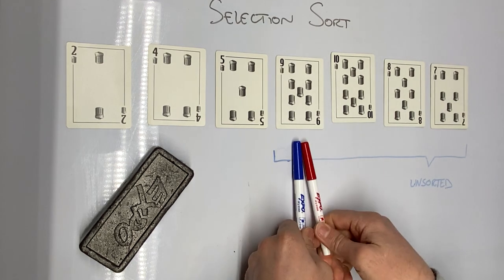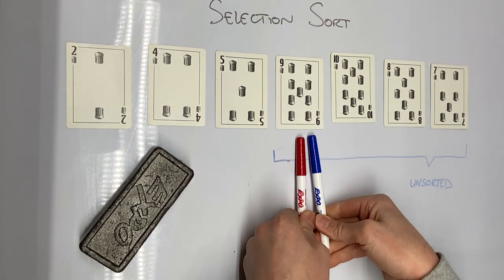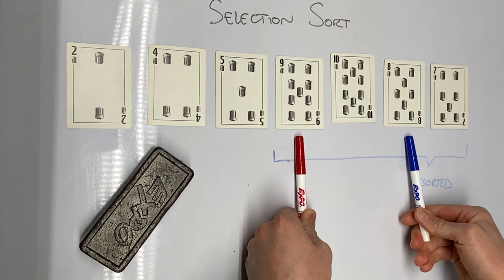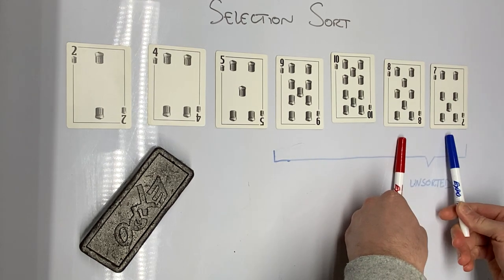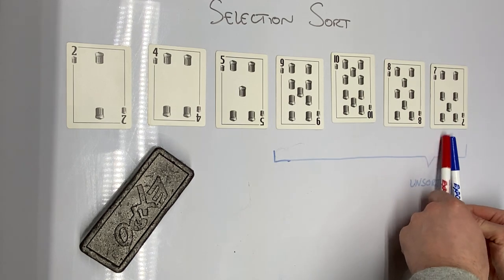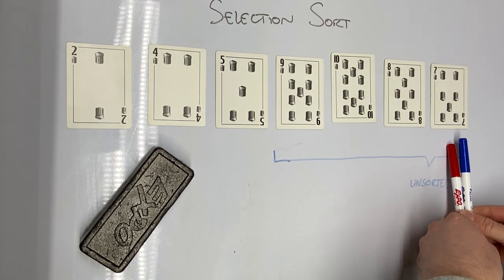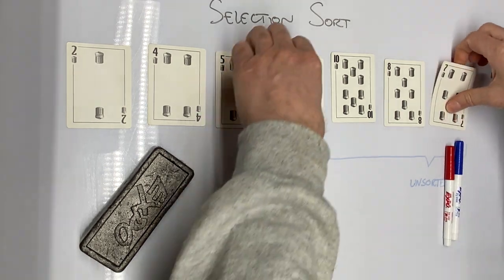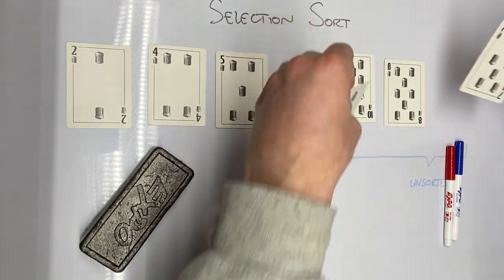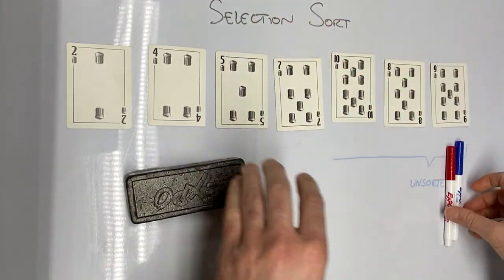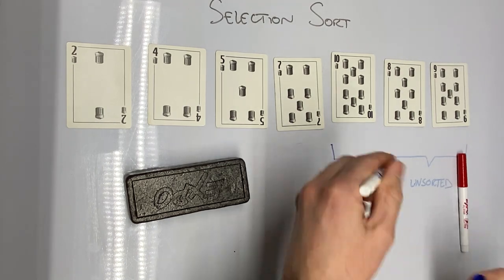Scanning again. Nine is the smallest card — not the ten. Eight is smaller than nine. Seven is smaller than eight. So seven is the smallest card in the unsorted region. We swap the seven with the card at the beginning of the unsorted region, and the unsorted region shrinks.